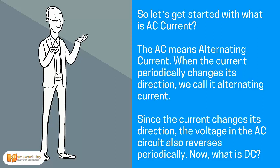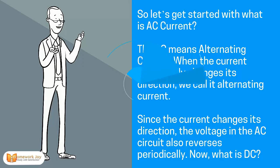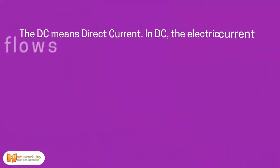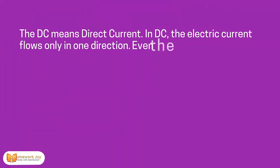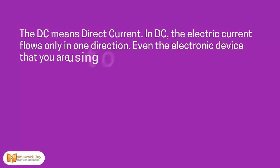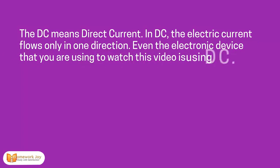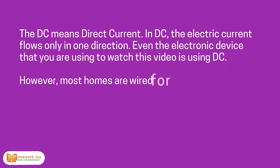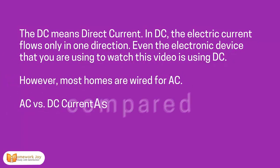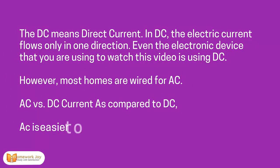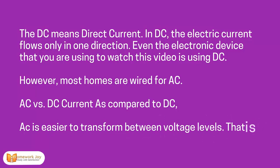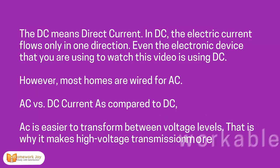Now, what is DC? DC means direct current. In DC, the electric current flows only in one direction. Even the electronic device that you are using to watch this video is using DC.